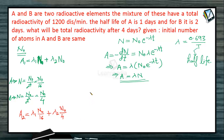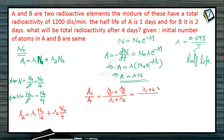Now we divide the two equations. A2/A1 = (λ₁/16 + λ₂/4) / (λ₁ + λ₂), which simplifies to (λ₁ + 4λ₂) / (16λ₁ + 16λ₂), and can be further written as (λ₁/λ₂ + 4) / (16 × (λ₁/λ₂ + 1)), by dividing both the numerator and denominator by λ₂.